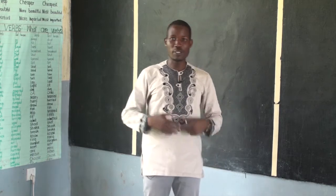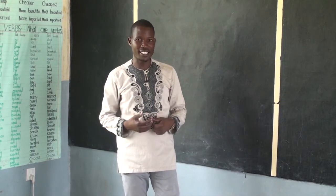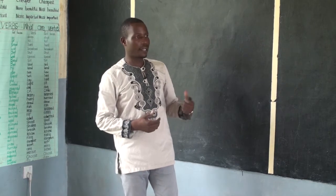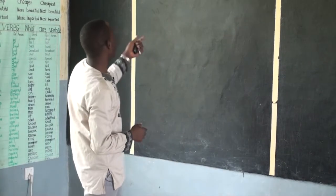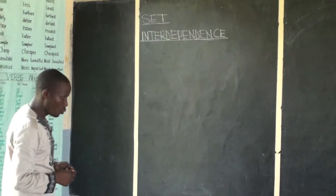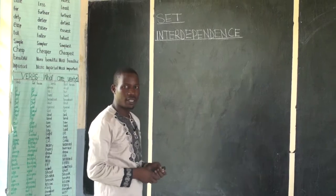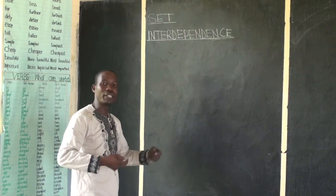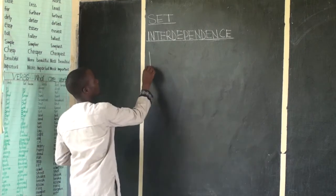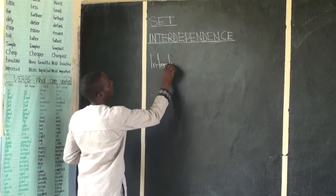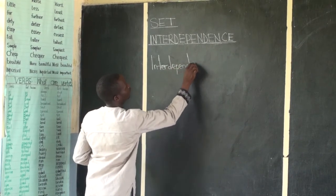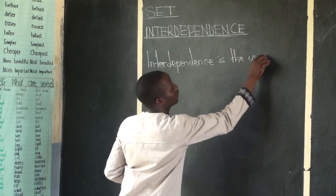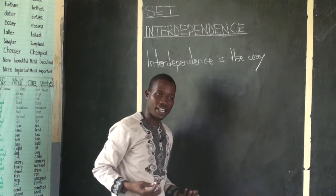Today we are going to look at interdependence — to see how plants depend on animals and how animals depend on plants. We shall also see how plants depend on plants, and how animals depend on animals. Interdependence simply refers to the way how living things depend on each other for survival.